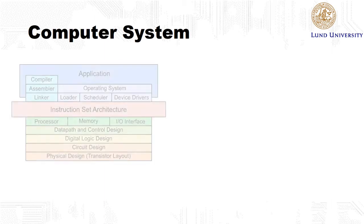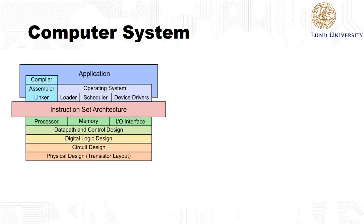A computer system consists of many parts. At the top we have the software or the application. This might run on some operating system, which may enable the application to make calls to different drivers so that the software can access I/O devices, for example a printer, screen, or ethernet. Then we have the instruction set architecture, which is the interface between software and hardware. The instruction set architecture specifies which kinds of instructions or operations the hardware can perform.